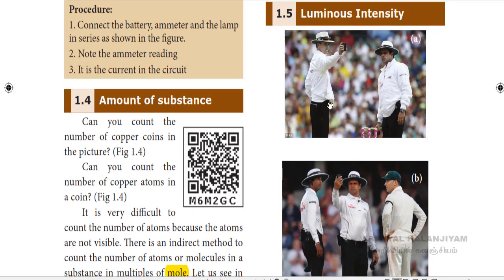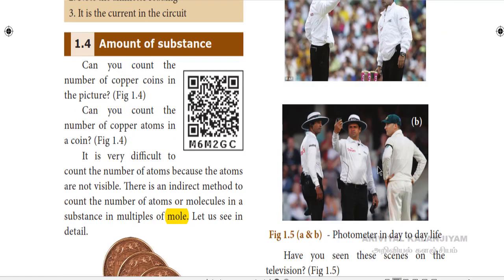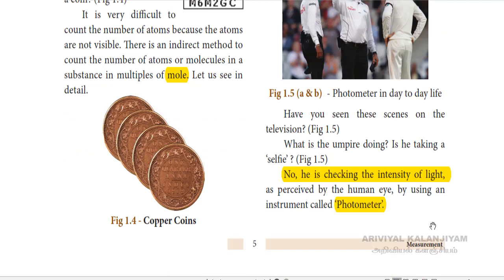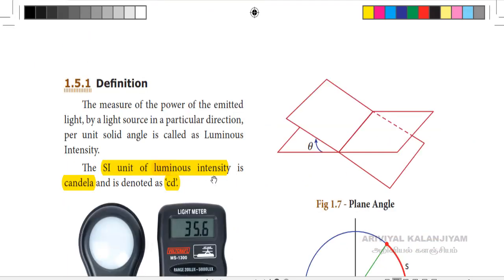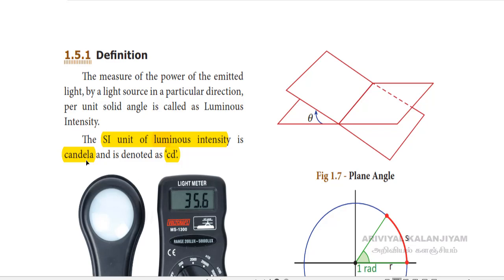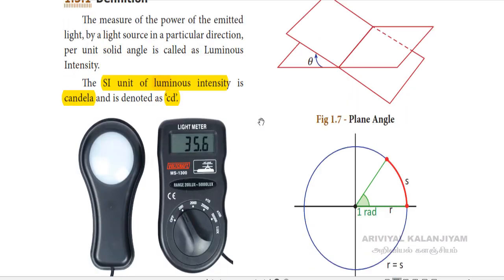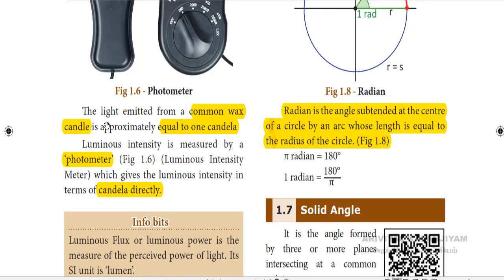If you look at a cricket match, there is an instrument used to measure the intensity of light. The SI unit of luminous intensity is called candela and it is denoted as CD.